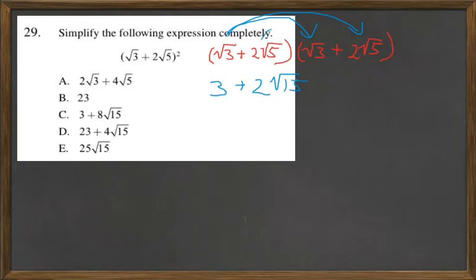And then we go on the inside. 2 square root of 5 times square root of 3 gives us another 2 square root of 15.